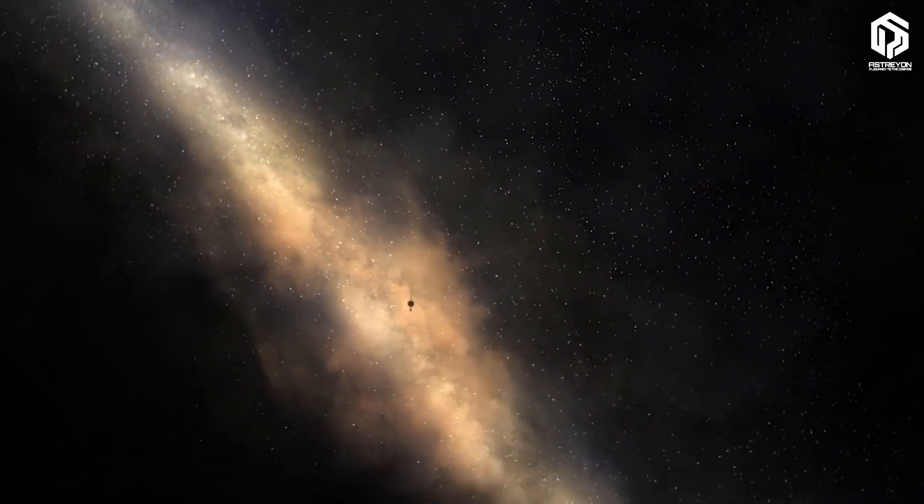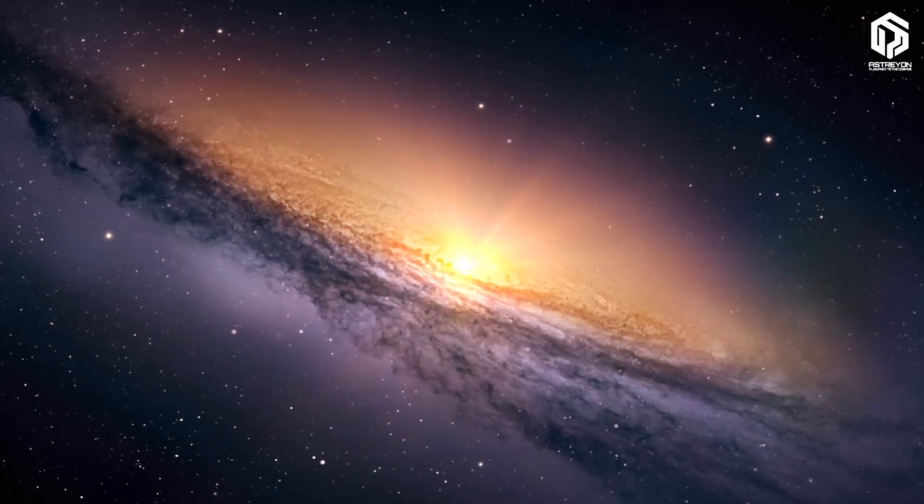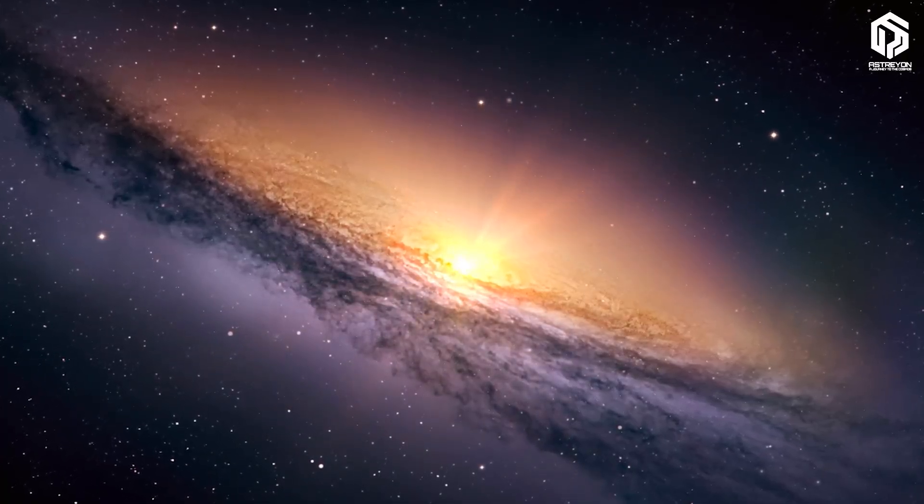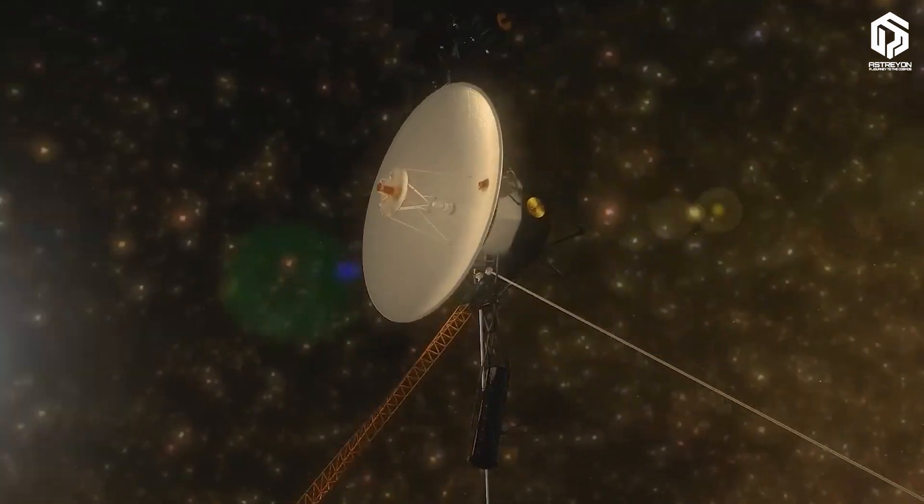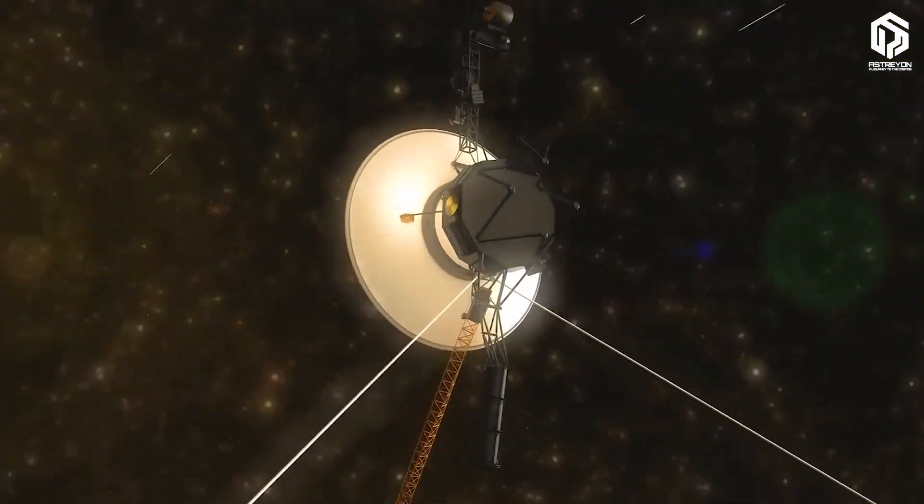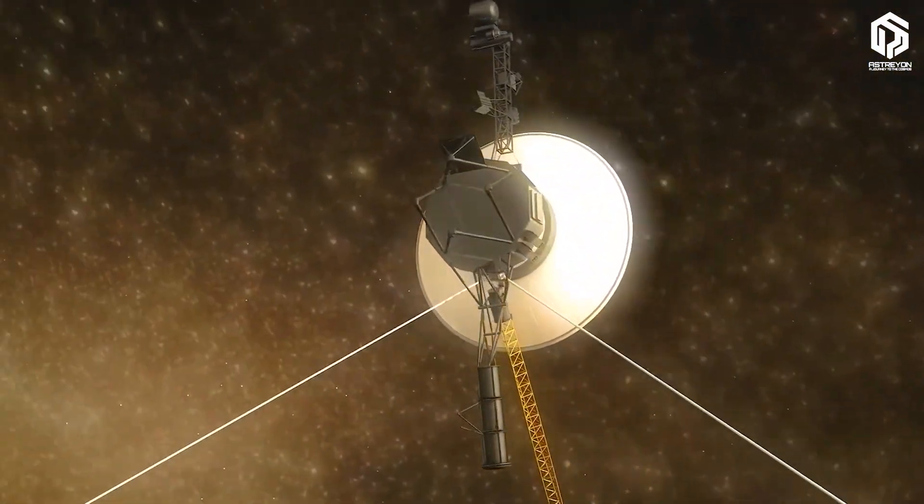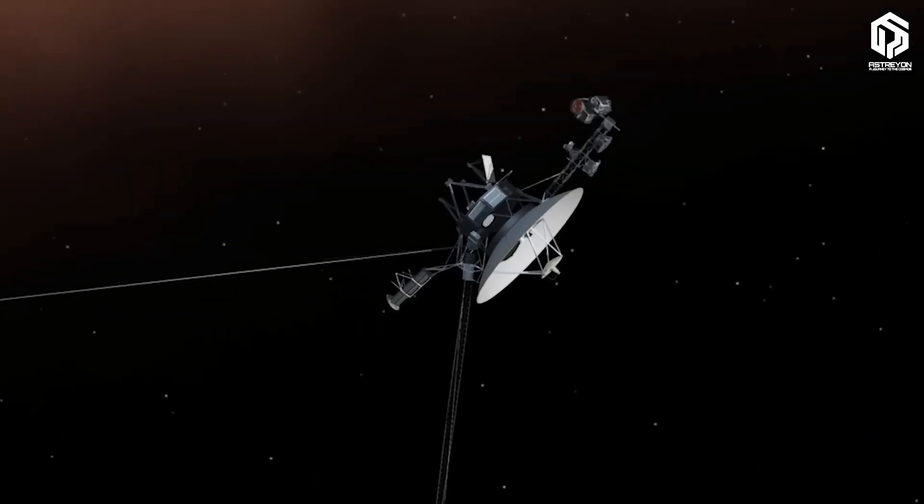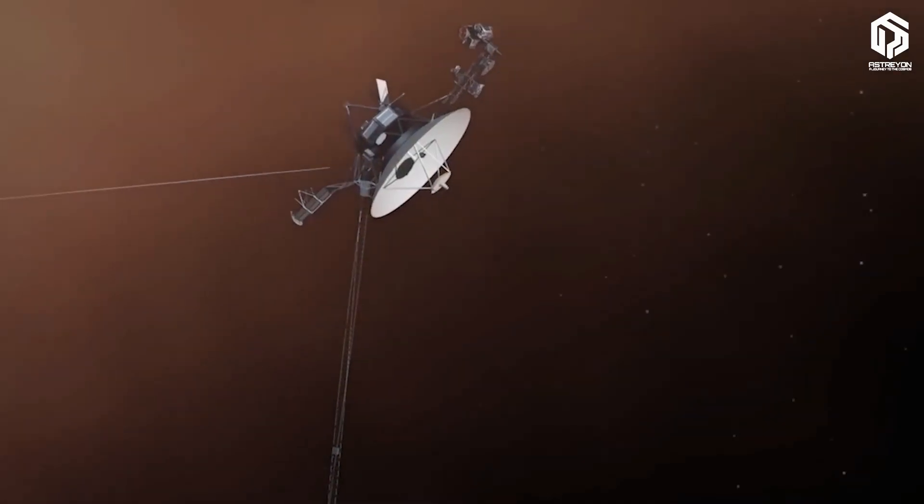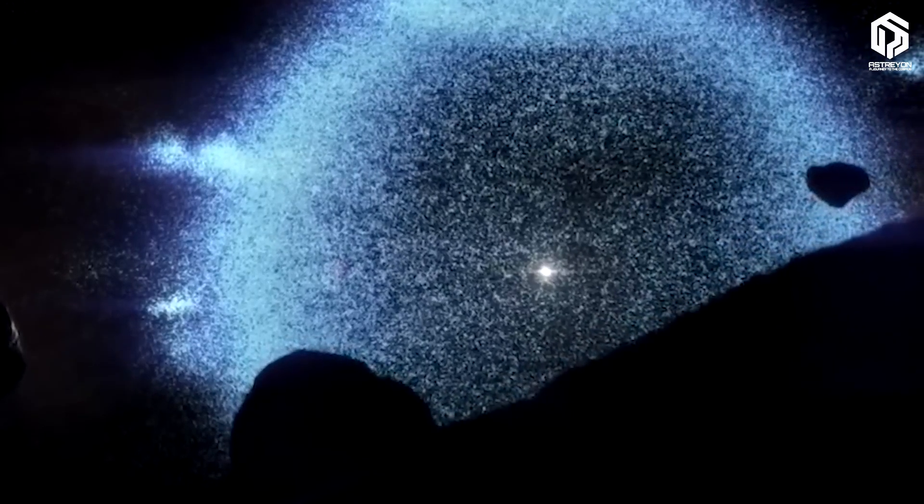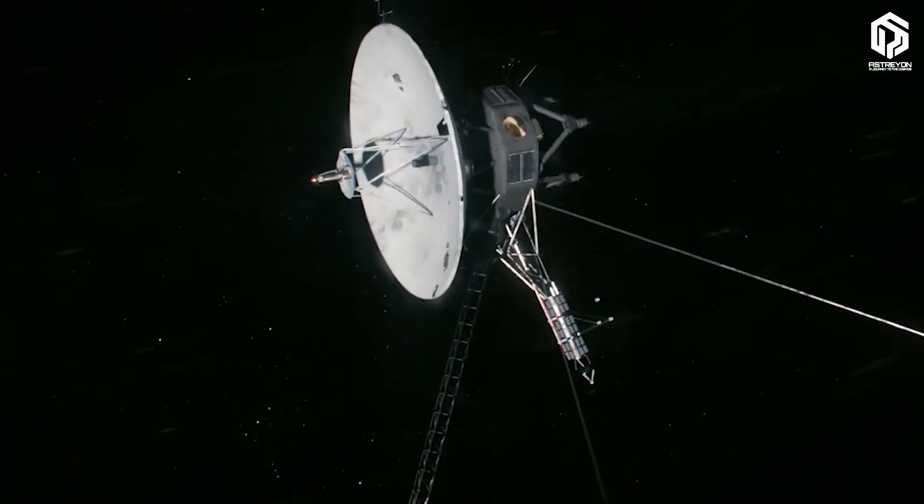Amid these fluctuations, Voyager also monitored galactic cosmic rays, high-energy particles from supernova explosions in distant parts of the galaxy. Outside the heliosphere, these rays are more intense because the solar wind no longer weakens them. By measuring them, Voyager showed how these particles spread in the interstellar medium and interact with the heliosphere, deepening our understanding of the solar system's protection against cosmic radiation. Radiation that can alter DNA and threaten life.